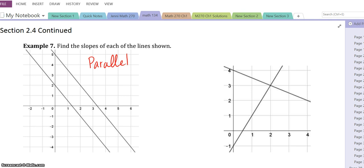The graph on the left is an example of parallel lines. Two parallel lines or two lines are parallel if the lines never intersect. What they're asking you to do is find the slope of each line. So let's go ahead and do that.